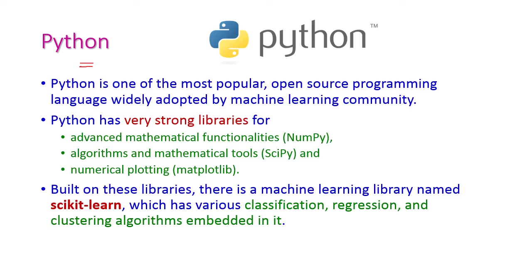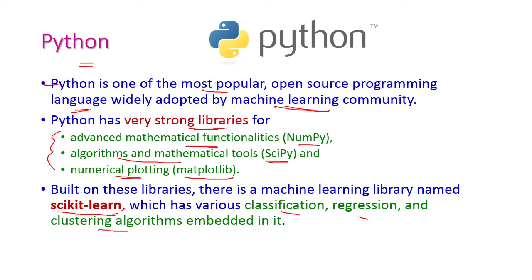The first one is Python. Python is one of the most popular open source programming languages, adopted by the machine learning community. It has very strong libraries, for example NumPy, which is used for advanced mathematical functionalities, SciPy which is used to develop algorithms and mathematical tools, and Matplotlib for plotting graphs. Apart from that it has Scikit-learn (scientific kit-learn), by using which we can do classification, regression, and clustering algorithms embedded in this library.